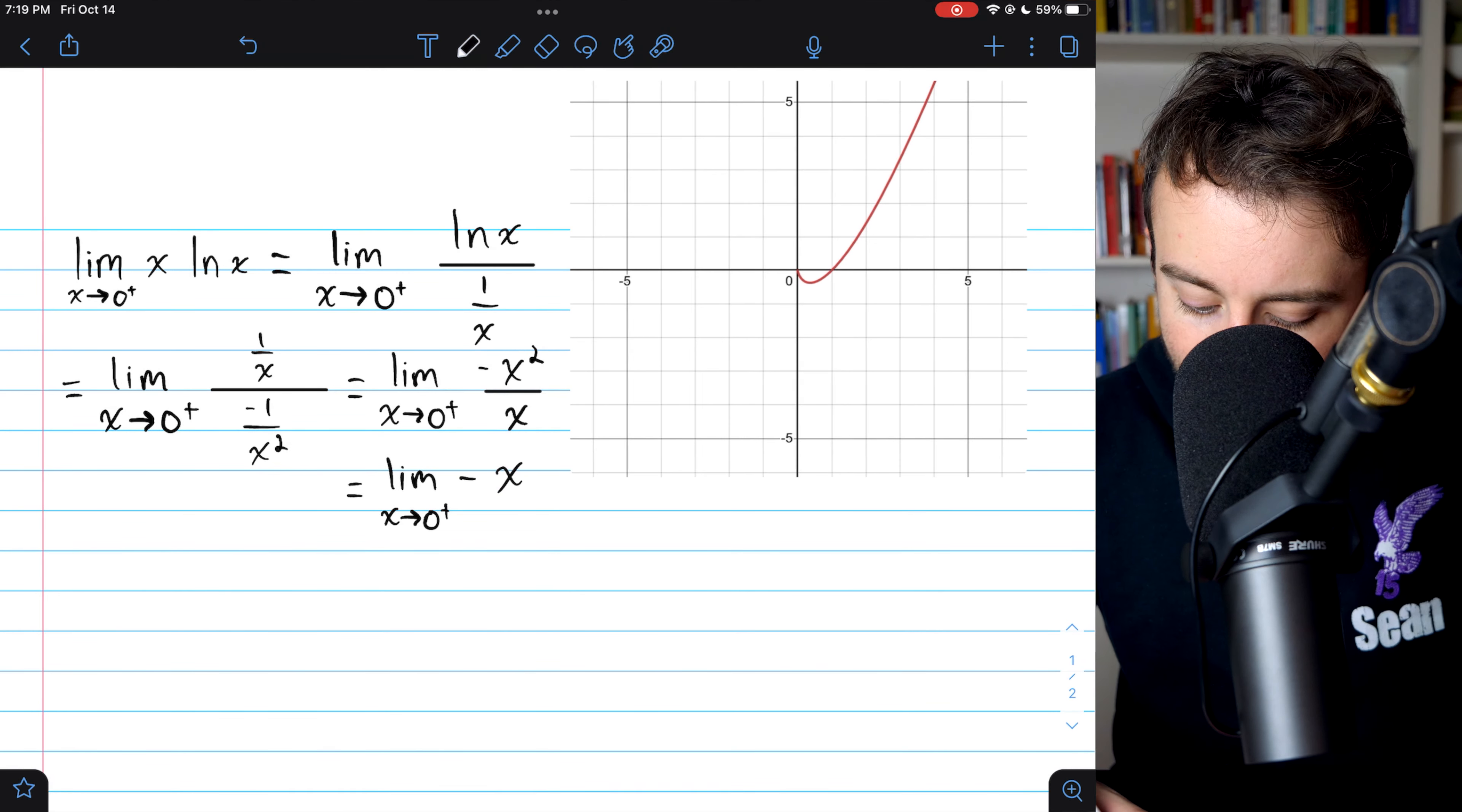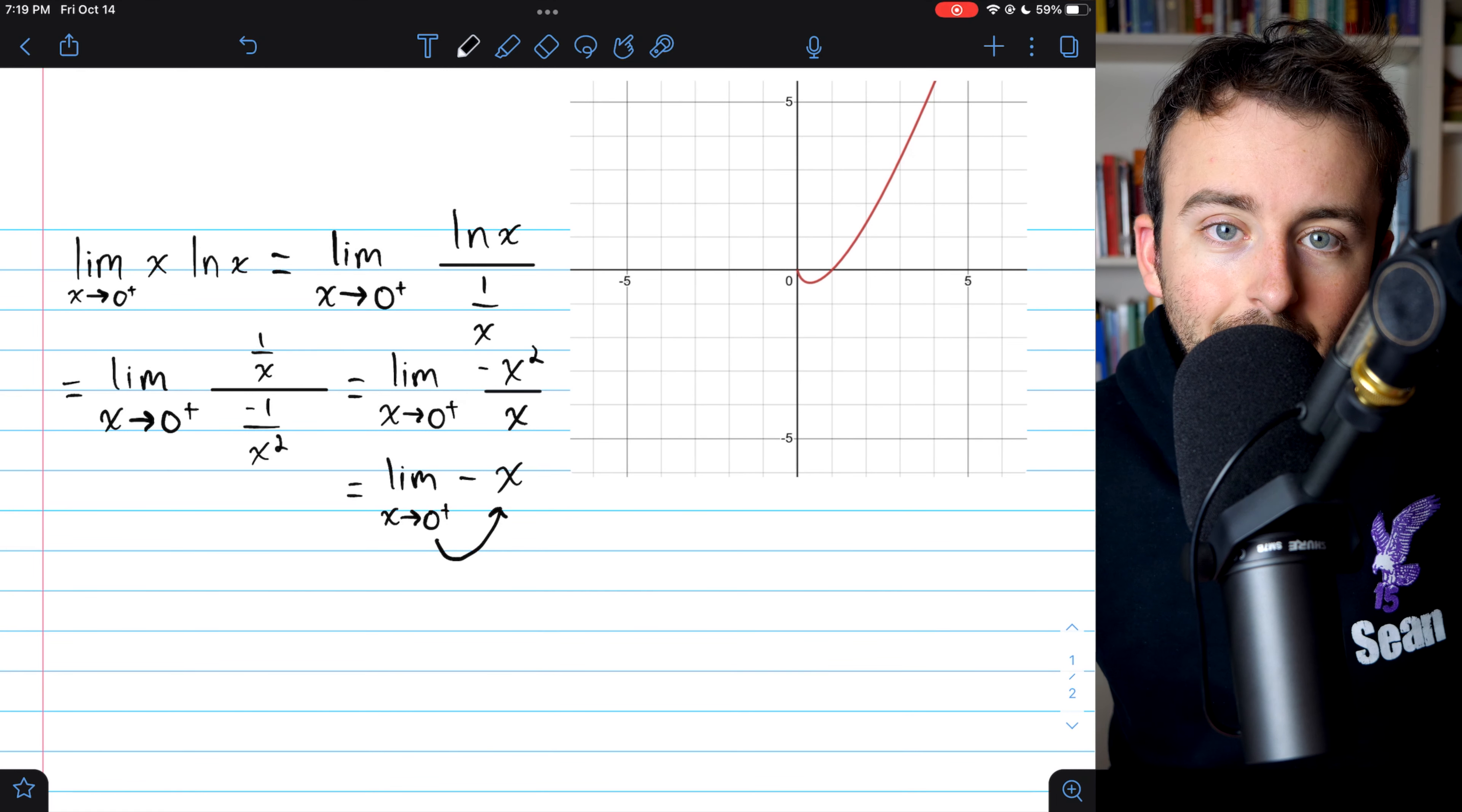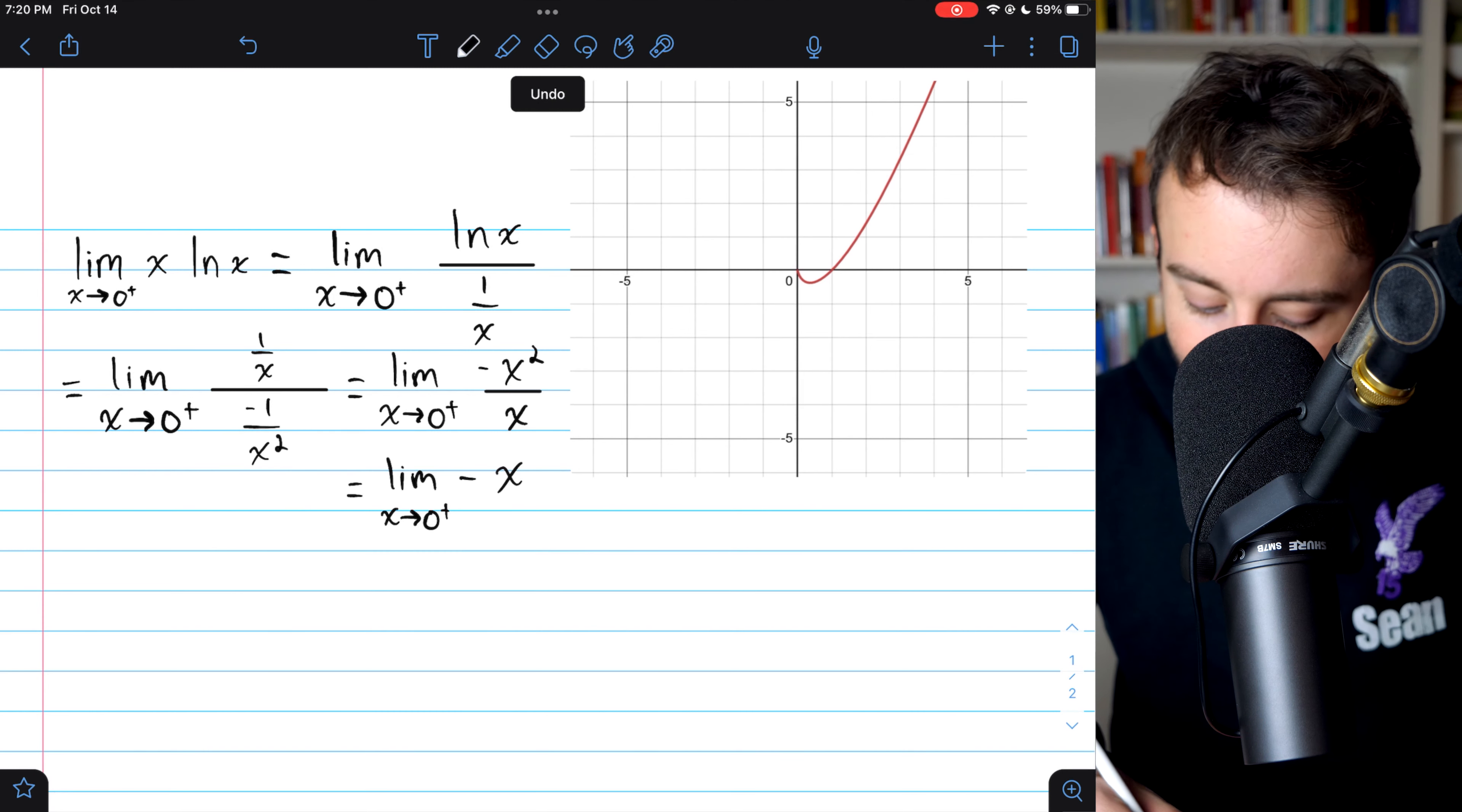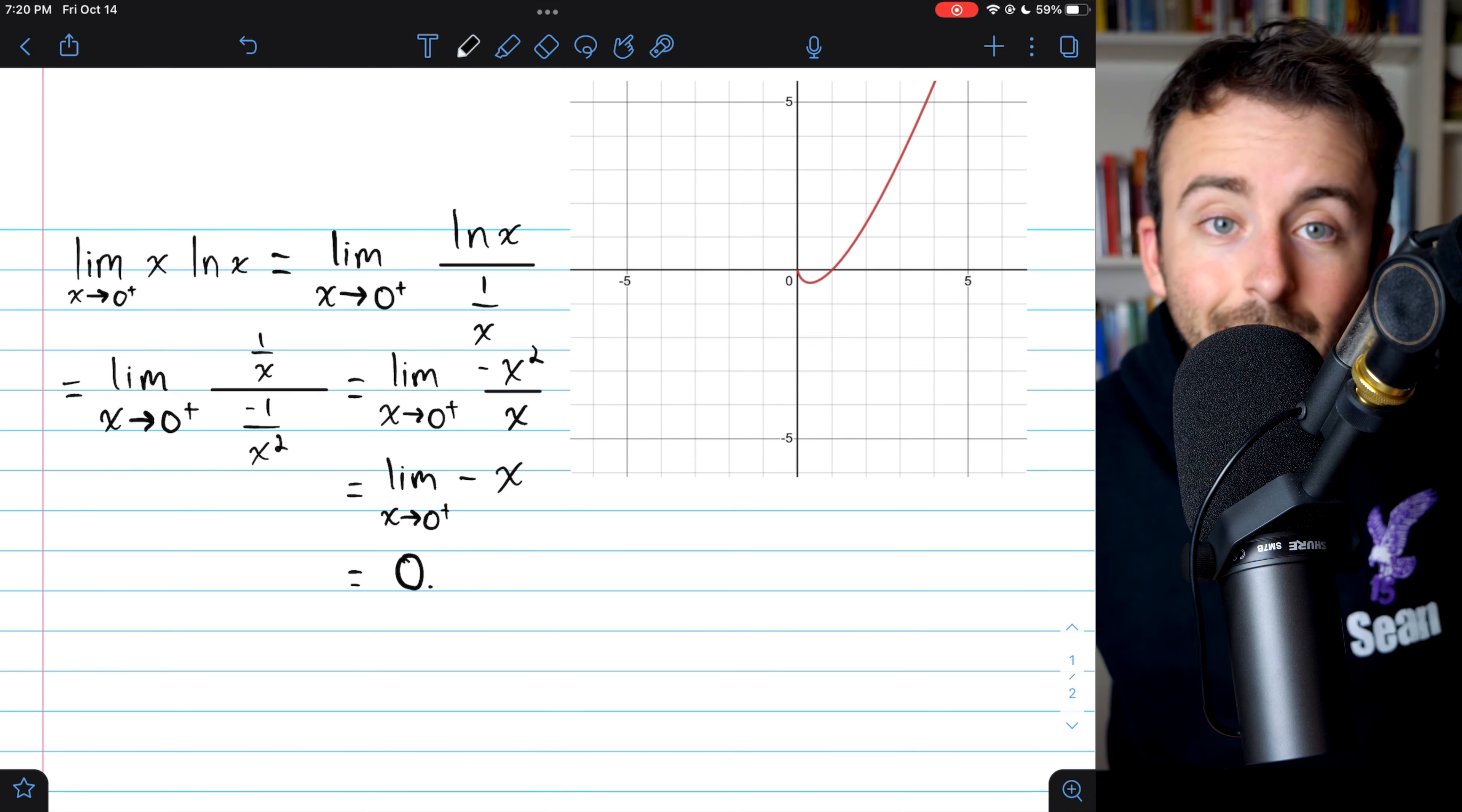And at this step, we can just plug zero into the limit since negative x is continuous and defined at zero. And that's going to tell us the limit, as we expected, is zero.